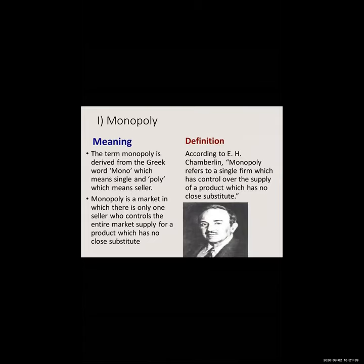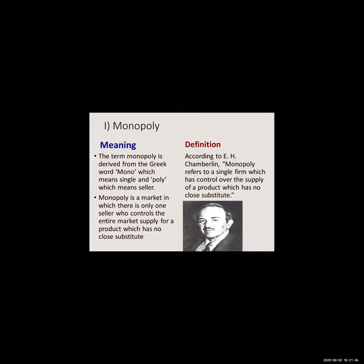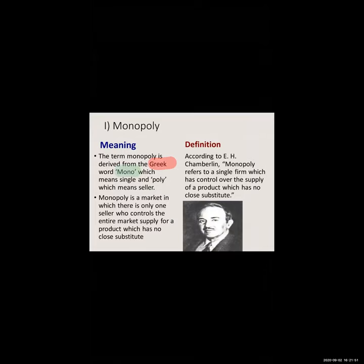The term monopoly is derived from the Greek word. The word is split into two parts: 'mono' means single, whereas 'poly' means seller. So if I'm telling you oligopoly — 'oligo' means different, and 'poly' means seller. Monopoly is derived from the Greek word: mono means single and poly means seller.